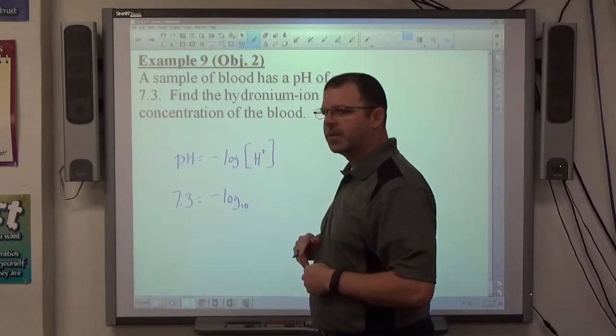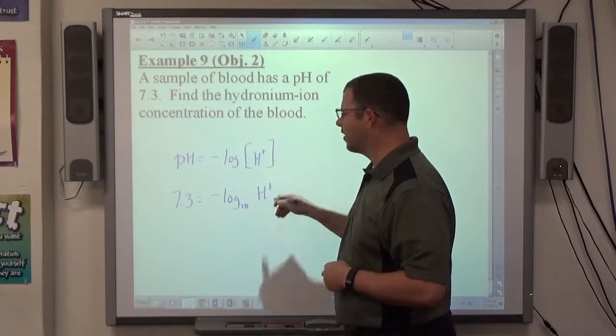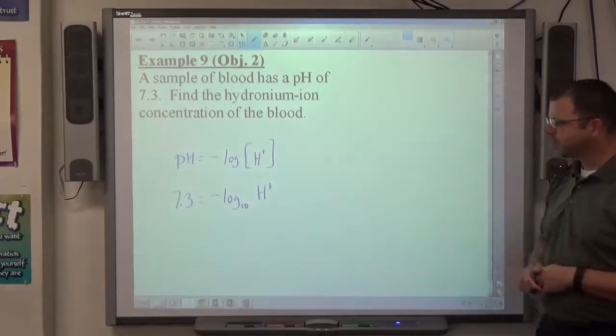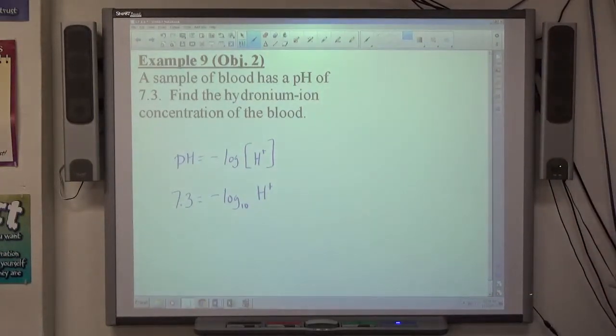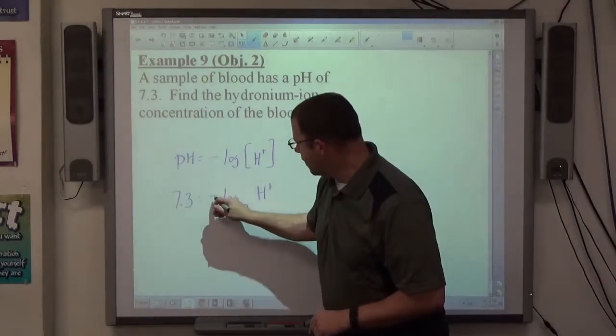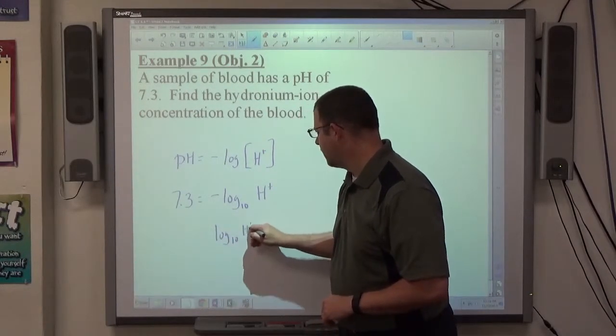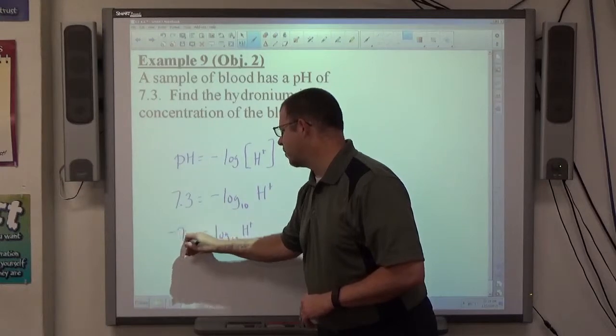I'm going to change this to log base 10. I'm going to actually write the 10 there, just to highlight the fact that it's base 10. All right. If I'm trying to solve a logarithmic equation, the first thing I'm going to do is get the log equals thing instead of negative log equals thing. So I would prefer this to be positive log base 10 of H+. And I'm going to make this negative 7.3.